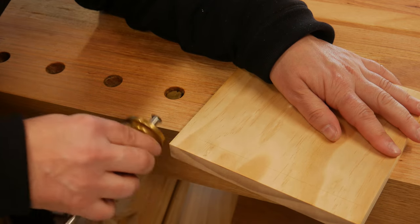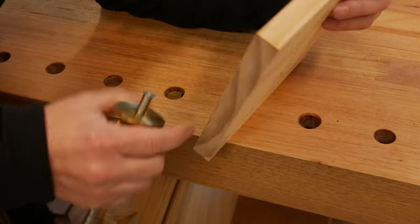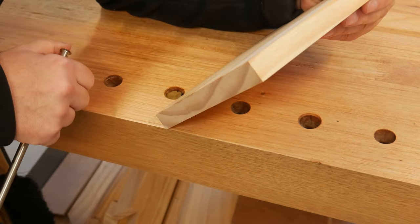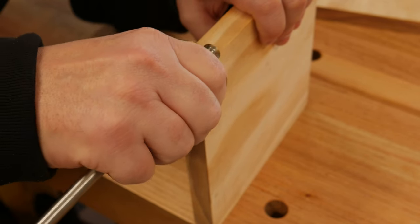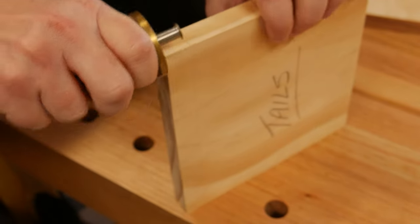Multiple light passes with the gauge work out much better than applying heavy pressure. The tail board is marked out the same way, except this time both edges are marked out to accept the two half pins.